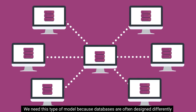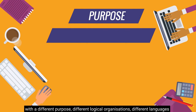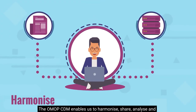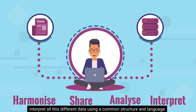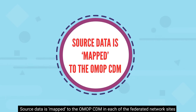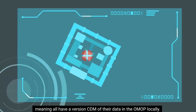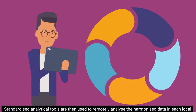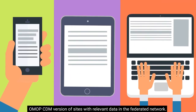We need this type of model because databases are often designed differently — with different purposes, different logical organizations, different languages and terminologies, or collected in different ways and in different systems. The OMOP CDM enables us to harmonize, share, analyze, and interpret all this different data using a common structure and language. Source data is mapped to the OMOP CDM in each of the federated network sites, meaning all have a local version of their data in the OMOP CDM. Standardized analytical tools are then used to remotely analyze the harmonized data in each local OMOP CDM version.